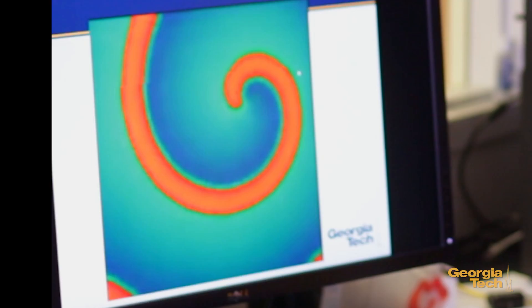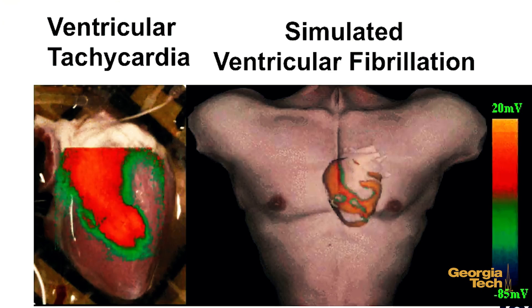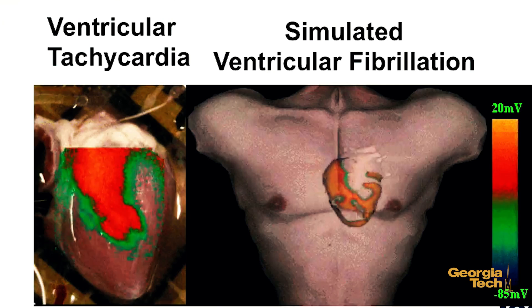These spiral waves actually appear in nature in many systems. Particularly, they appear in the heart. The heart in normal rhythm contracts because there's an electrical wave that propagates through the heart and makes it contract. When one of these waves is disrupted, it can produce spiral waves. This spiral wave basically drives the heart to a much faster frequency, which is called tachycardia. That case is an anomaly and can be dangerous.